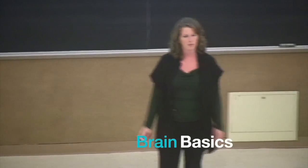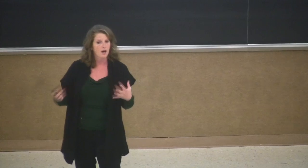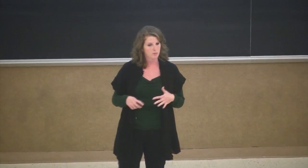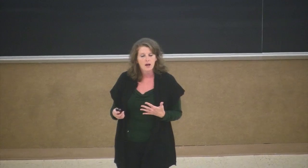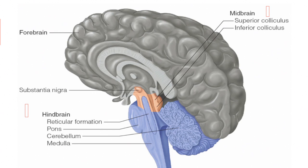Let's talk about some basic divisions of the brain. We're going to break it into three areas and give the broad function of each. The simplest breakdown divides the brain into three regions: we have the forebrain, the midbrain, and then the hindbrain, which includes the cerebellum and the brainstem. We'll walk through each of these and give you general function for each.